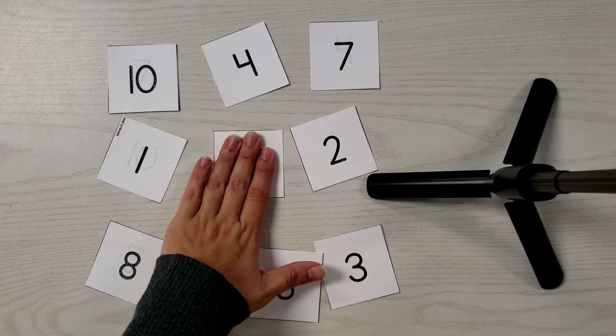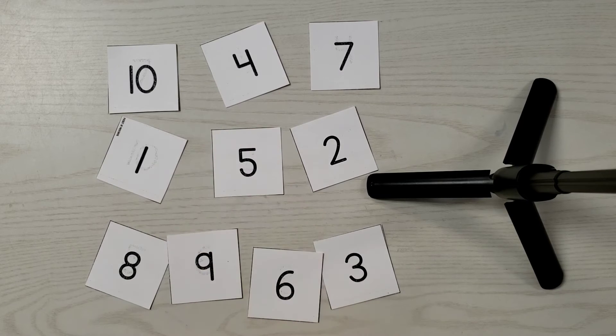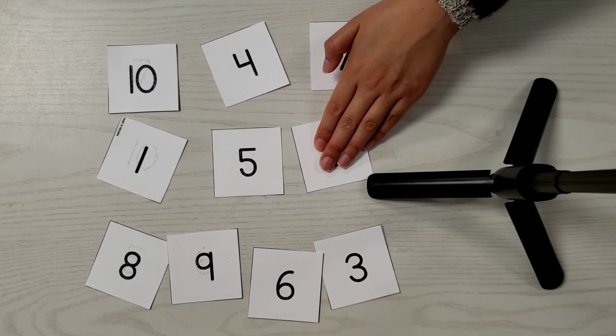Entonces lo que van a hacer los padres o los hermanos mayores es decir un número y el niño lo que tiene que hacer es tocar el número. Si por ejemplo si llamaran dos entonces el niño toca el número dos.